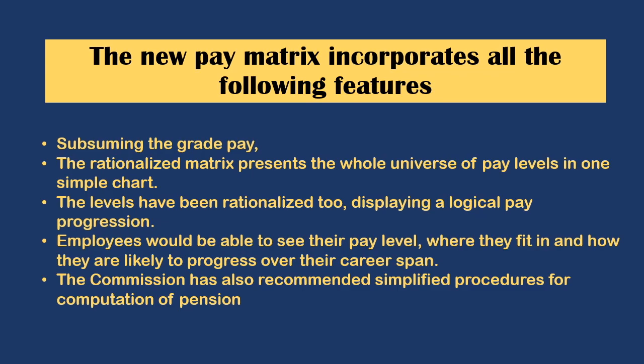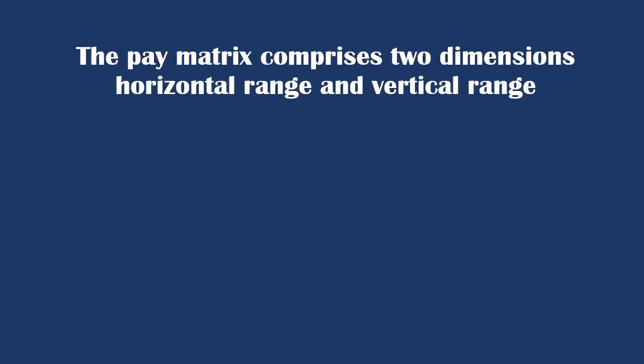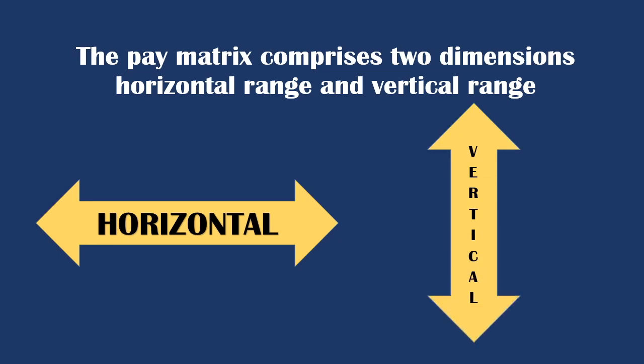Over their career span, number five, the commission has also recommended a simplified procedure for computation of pension. The Seventh CPC recommends a pay matrix with distinct pay levels comprising two dimensions: horizontal range and vertical range. The horizontal range corresponds to a functional role in the hierarchy, assigned numbers one, two, three, and so on till 18. The vertical range for each level denotes pay progression within the level.